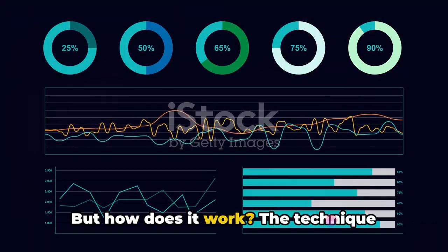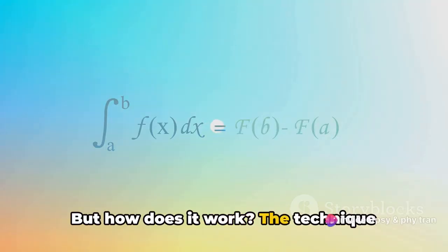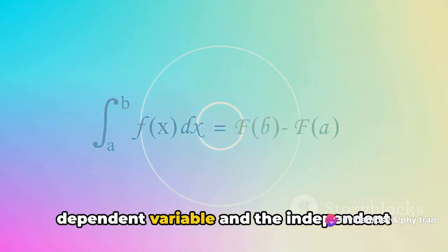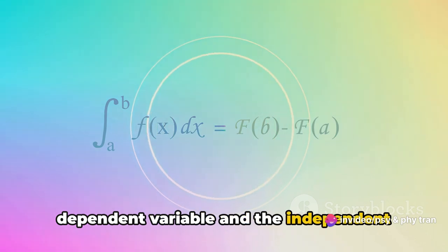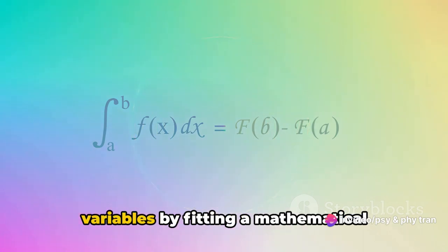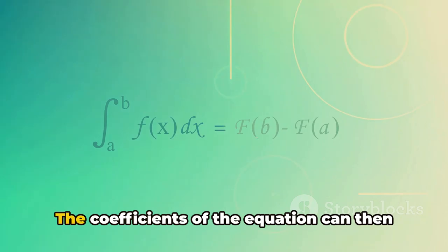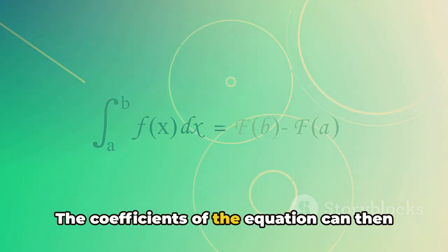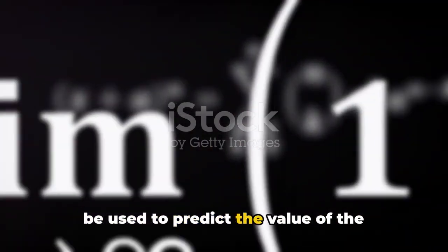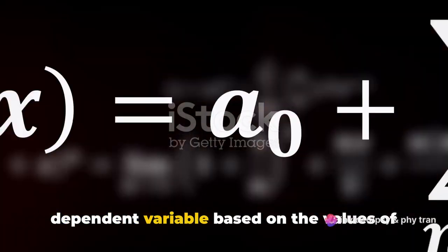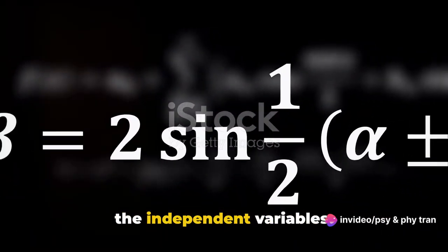But how does it work? The technique estimates the relationship between the dependent variable and the independent variables by fitting a mathematical equation to observed data. The coefficients of the equation can then be used to predict the value of the dependent variable based on the values of the independent variables.